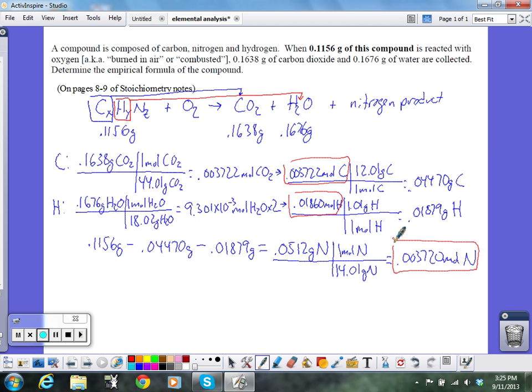So if we remember the rhyme, percent to mass. We didn't have percents, but we start with masses. Mass to moles. So here I have three moles. Divide by small. Divide by the smallest number of moles that you see up here. The smallest number of moles is moles of nitrogen. So I'm going to divide the moles of carbon by the moles of nitrogen, the moles of hydrogen by the moles of nitrogen, and the moles of nitrogen by the moles of nitrogen.